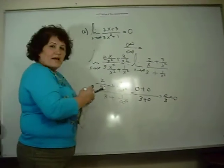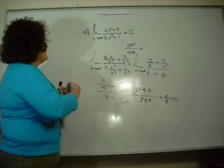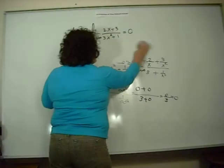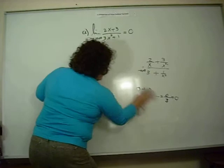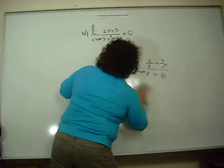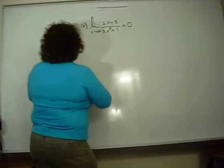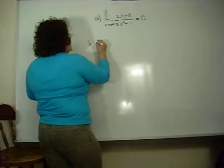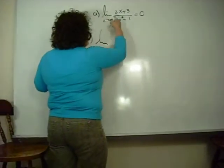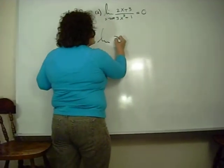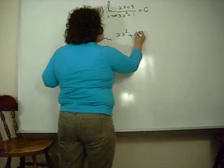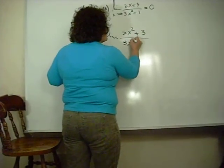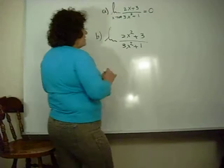Now let's look at what happens when the powers are equal. I'll erase this and do Example B. The limit of two x squared plus three over three x squared plus one, as x approaches infinity.